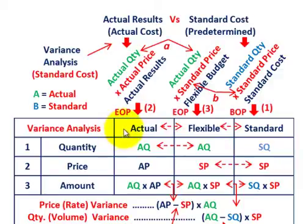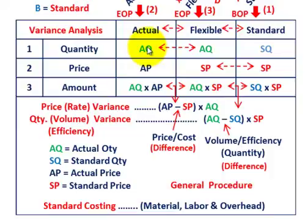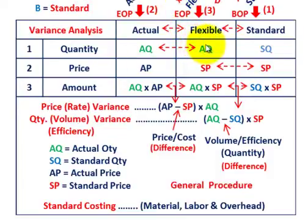This is how we look at our variance. We're looking at the differences between the actual, the flexible, and the standard amount. The overall variance would be between your actual and your standard. For the quantity, the actual amount uses actual quantity (AQ), the flexible amount also takes on the actual quantity, and the standard amount is based on the standard quantity (shown in blue). For price, we have actual price for our actual amount, but the flexible budget takes on the standard price, as does the standard amount.